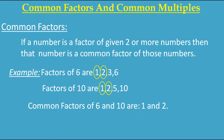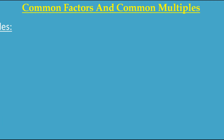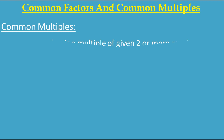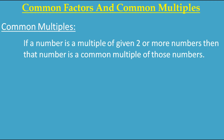Now let's understand common multiples. If a number is a multiple of given two or more numbers, then that number is a common multiple of those numbers. It's very easy — just the same as factors. If you are finding multiples of any two or more numbers and you find that any number is the same multiple for the other numbers, then that multiple is called a common multiple of those numbers.